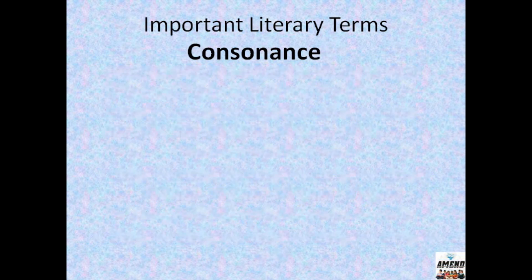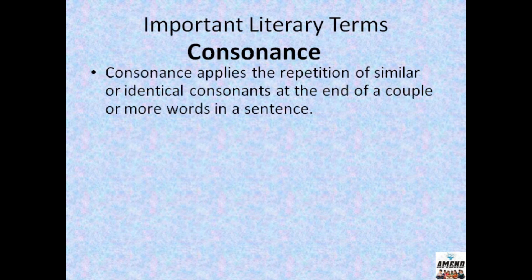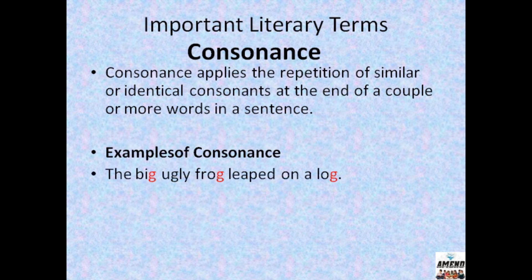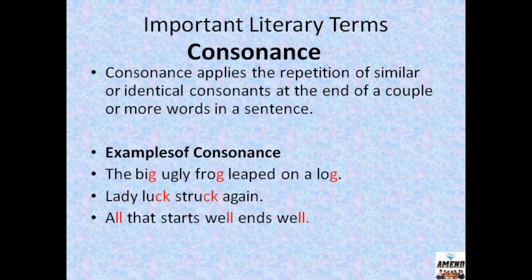Now consonance examples. Consonance is a stylistic literary device that applies the repetition of similar or identical consonants specifically at the end of two or more words in a sentence — the vowels of these words may be different. Example: 'The big ugly frog leaped on a log' — the G sound repeats in 'big,' 'frog,' and 'log.' 'Lady luck struck again' — the K sound repeats in 'luck' and 'struck.' 'All that starts will end well' — the L sound repeats in 'all,' 'will,' and 'well.'